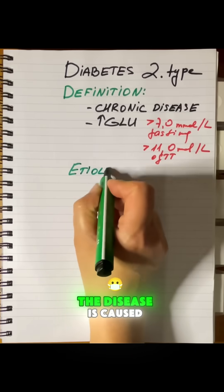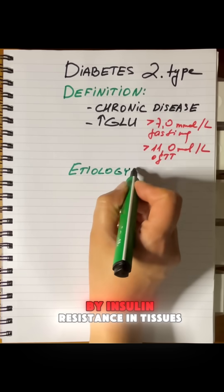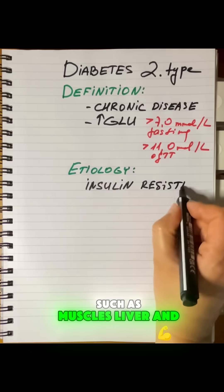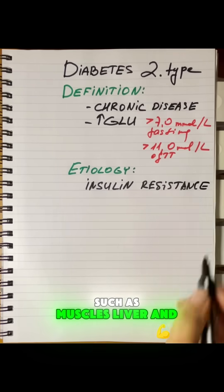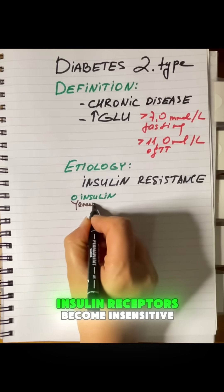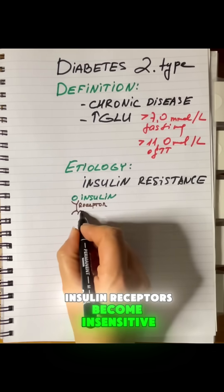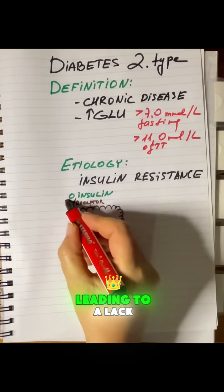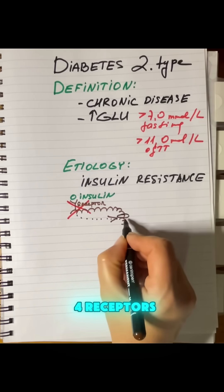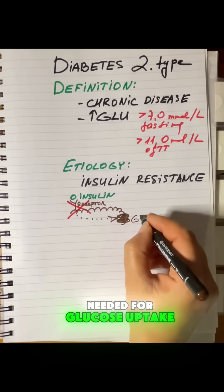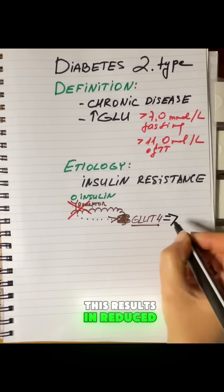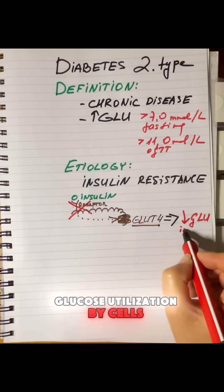Etiology: the disease is caused by insulin resistance in tissues such as muscles, liver, and adipose tissue. In the pathogenesis, insulin receptors become insensitive to insulin, leading to a lack of activation of GLUT4 receptors needed for glucose uptake into cells. This results in reduced glucose utilization by cells.